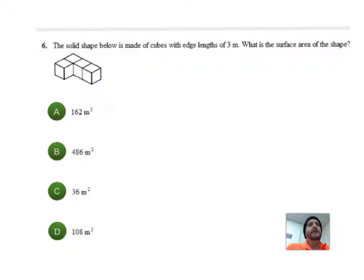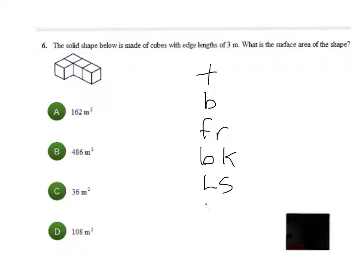So I have to find the surface area of the shape and it's not a regular figure, so the first thing I'm going to do is just do a little bit of writing. I have a top and I have a bottom, I have a front side and I have a back side, I have a left side and I have a right side. And what I'm going to end up doing is adding all these figures together.